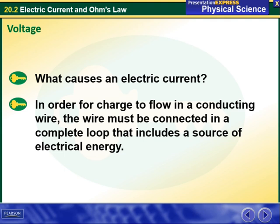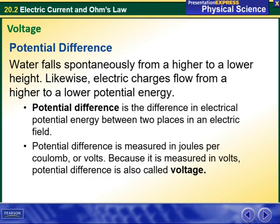Then we have voltage. What causes an electric current? In order for charge to flow in a conducting wire, the wire must be connected in a complete loop that includes a source of electrical energy. We have a constant called potential difference. Water falls from a higher to a lower height. Likewise, electric charges flow from a higher to a lower potential energy. Potential difference is the difference in electrical potential energy between two places in an electric field. It is measured in joules per coulombs, or volts. Because it is measured in volts, potential difference is also called voltage.